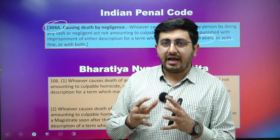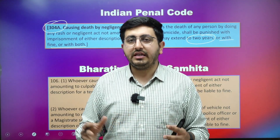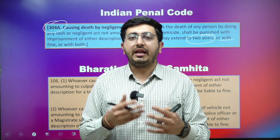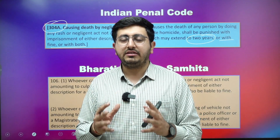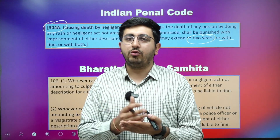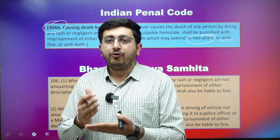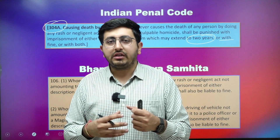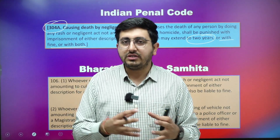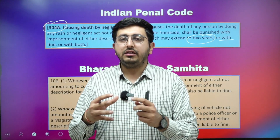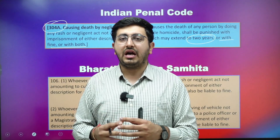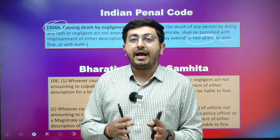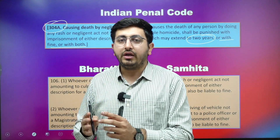This criminal rash and negligent act included many things — for example medical negligence by doctors, extreme rash acts causing harm, food adulteration or poisonous food products causing death — all these were included. And this also included hit and run cases, where accidents are caused by negligent driving. All of these had a maximum punishment of two years.